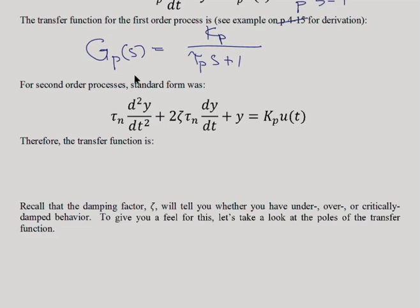So this is your first order, or sorry, your second-order process standard form. Now, we can take the Laplace transform of this and relate then U of T to Y, sorry, U of S to Y of S.